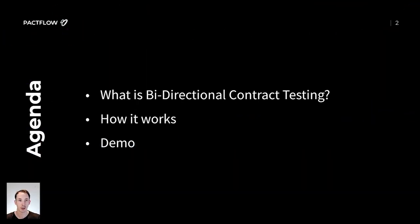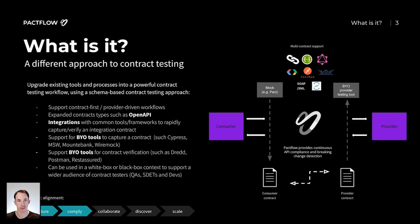In this video we're going to cover what bidirectional contract testing is, how it works, and we're going to go through a demo. Bidirectional contract testing is a new form of contract testing to complement support for the consumer-driven approach with Pact. Whereas Pact is a recording/replay style contract test using specification by example to prove correctness, bidirectional contract testing uses a schema comparison approach.